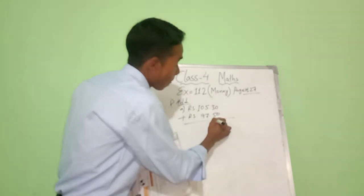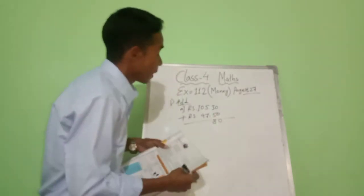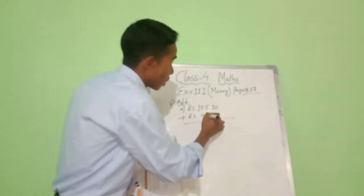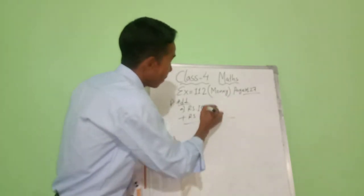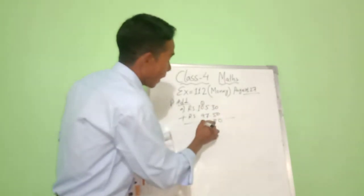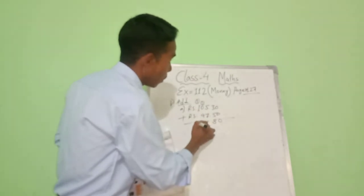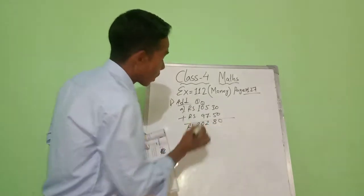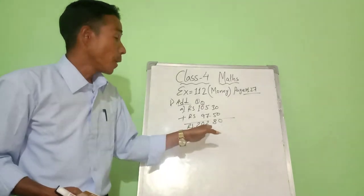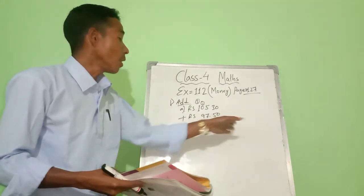Five plus three is eight. Seven plus five is twelve, one is carried over. Nine plus one is ten, carry one again. One plus one is two. So the total we got is 202 rupees 80 paise. This is our answer.